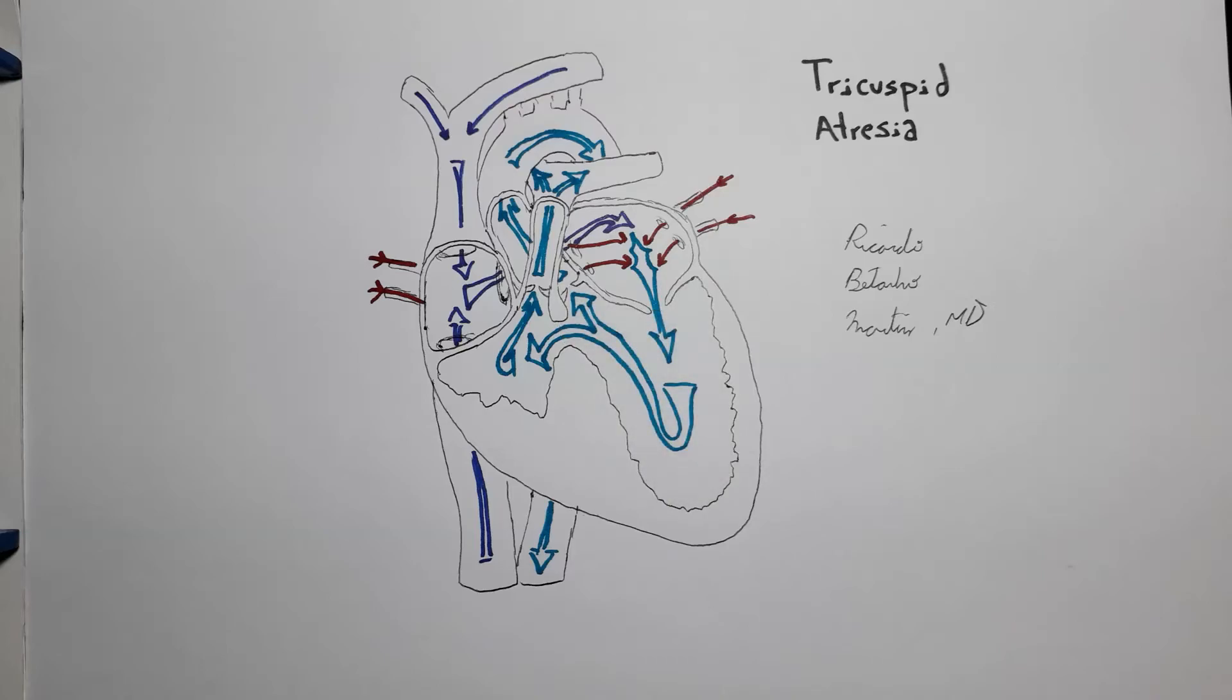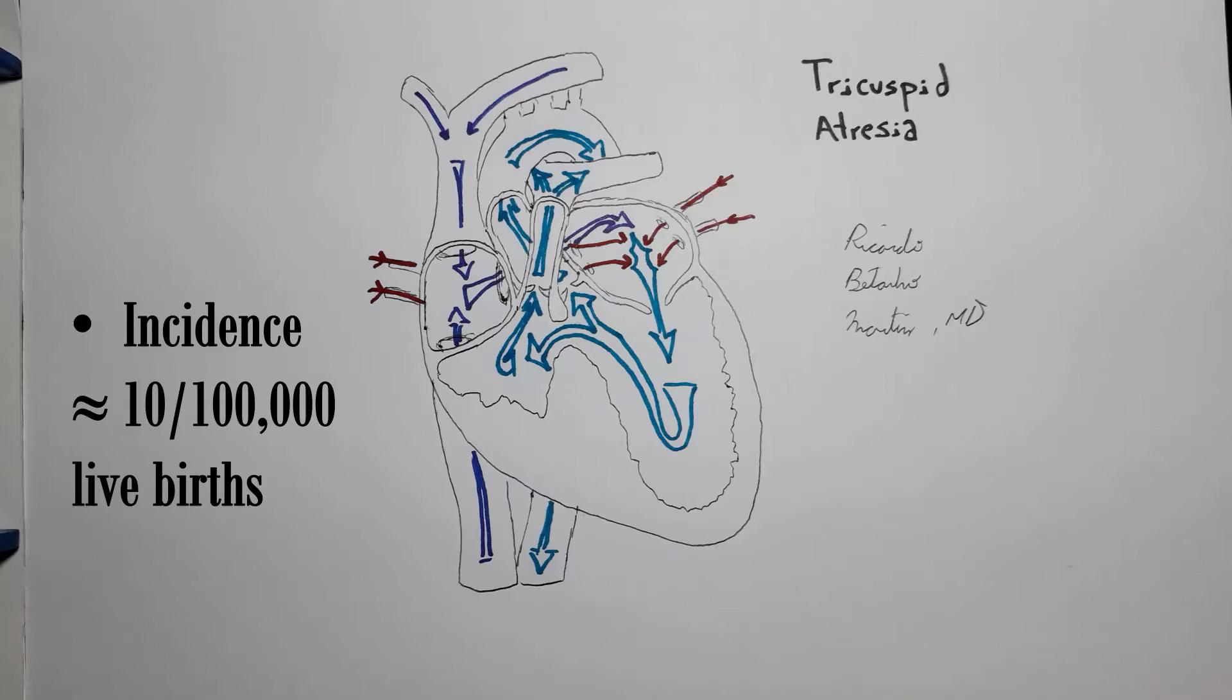The incidence of tricuspid atresia is estimated at 10 per 100,000 live births. As with many other congenital heart diseases, the etiology of tricuspid atresia is believed to be multifactorial. There are some genes believed to be associated with it. However, the triggering environmental factors during gestation are unknown. It does not appear to show any predilection for sex or ethnicity.